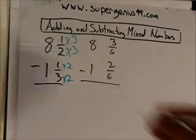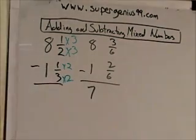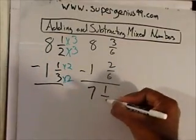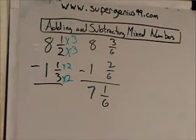So now we got eight and three-sixths minus one and two-sixths. Well, eight minus one is what? Seven. And then three-sixths minus two-sixths is what? One-sixths. All right. Any problems there? Let's try another one.